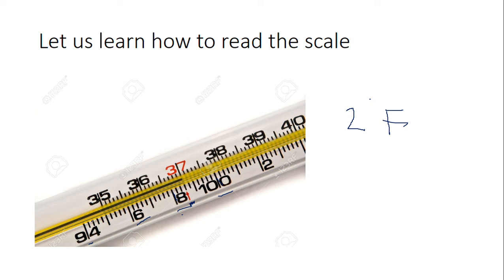Since 2 degrees Fahrenheit is divided into 10 divisions, each small subdivision is 2 ÷ 10 = 0.2 degrees Fahrenheit. You should learn how to read the scale correctly: each small division represents 0.2 degrees Fahrenheit.